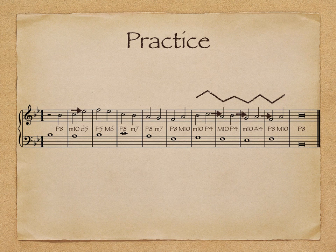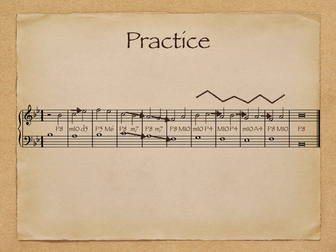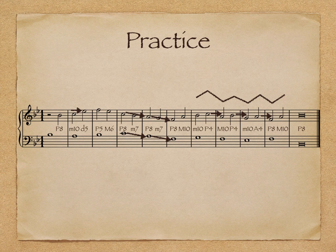Finally, we have successive parallel octaves in the middle of our example. Stepwise motion from beat to beat is a little more difficult in second species than in first species, and can result in parallel motions like these. Be sure to check your intervals first to avoid a situation like this. Listen again to the example and recognize these errors with your ears.